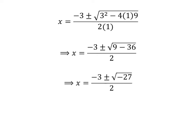Further simplification gives us x = (-3 ± √(-27)) / 2.